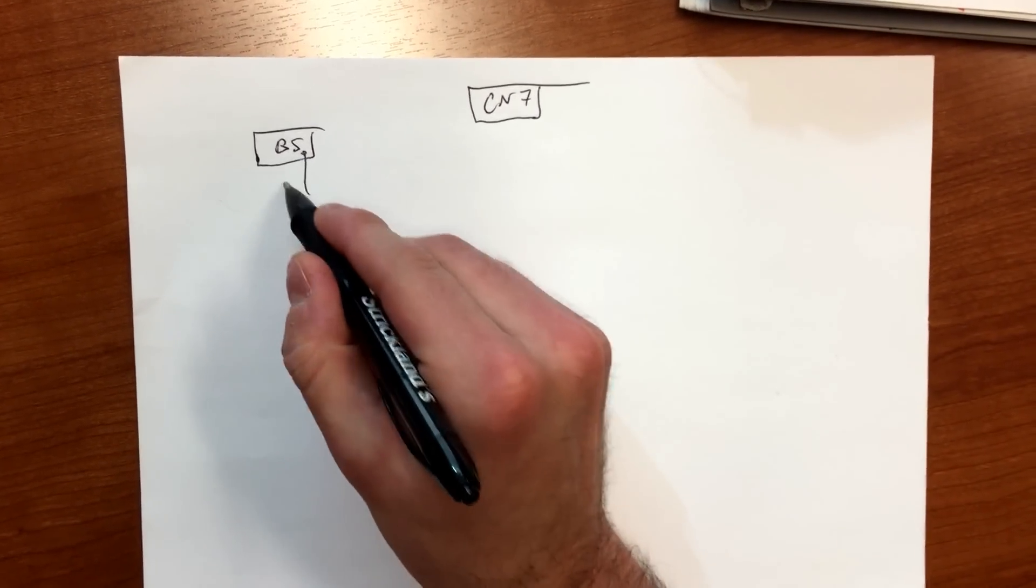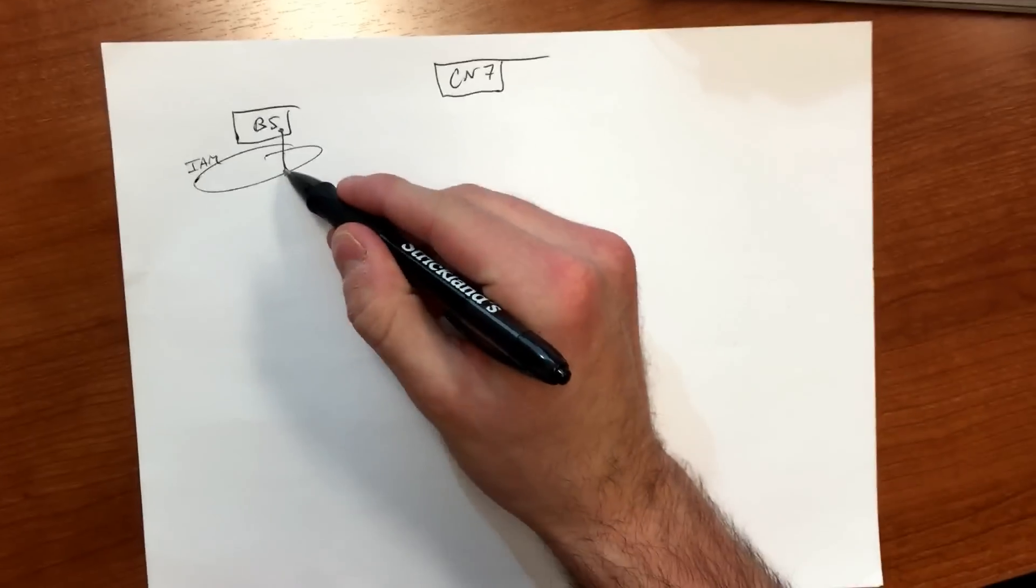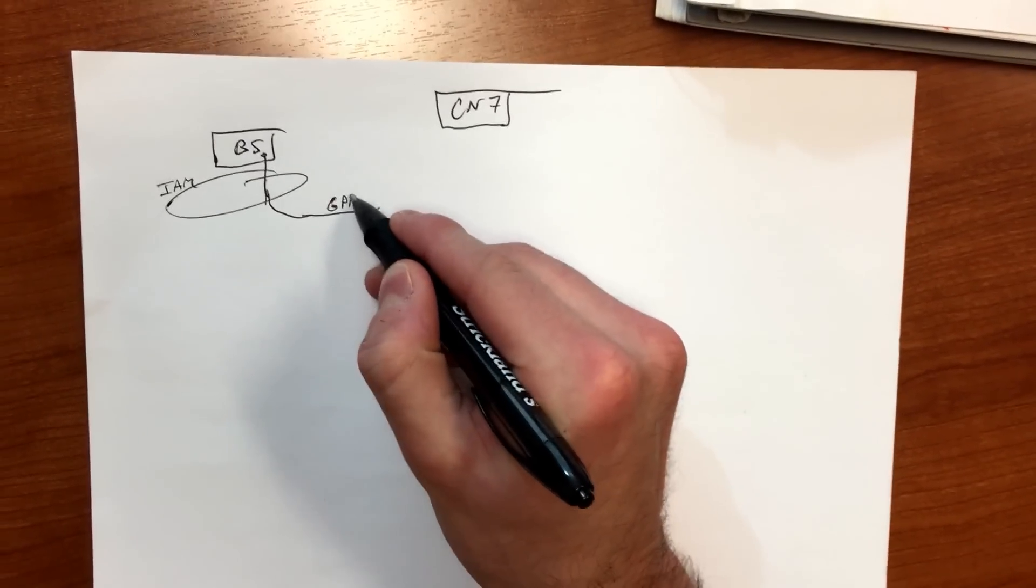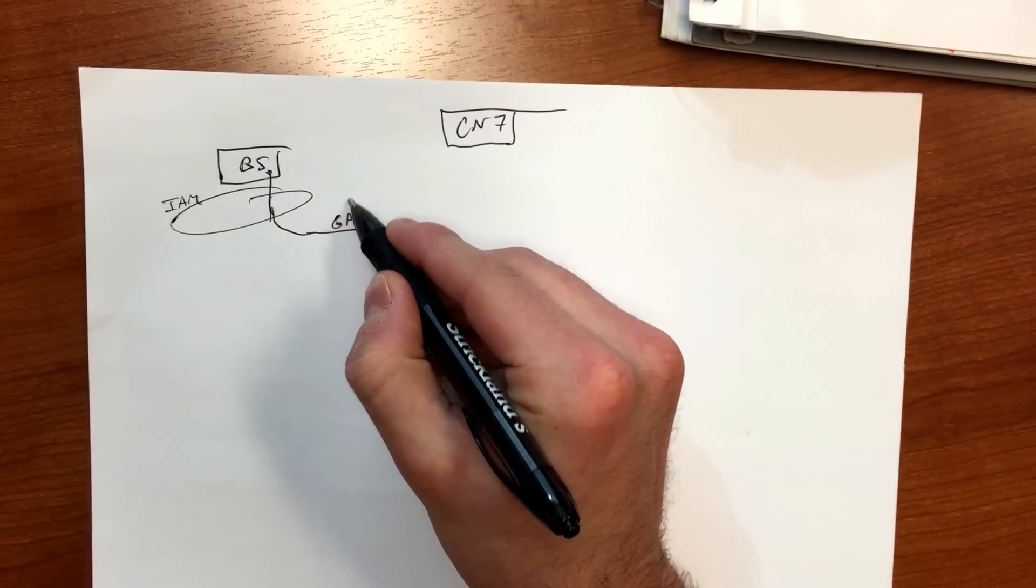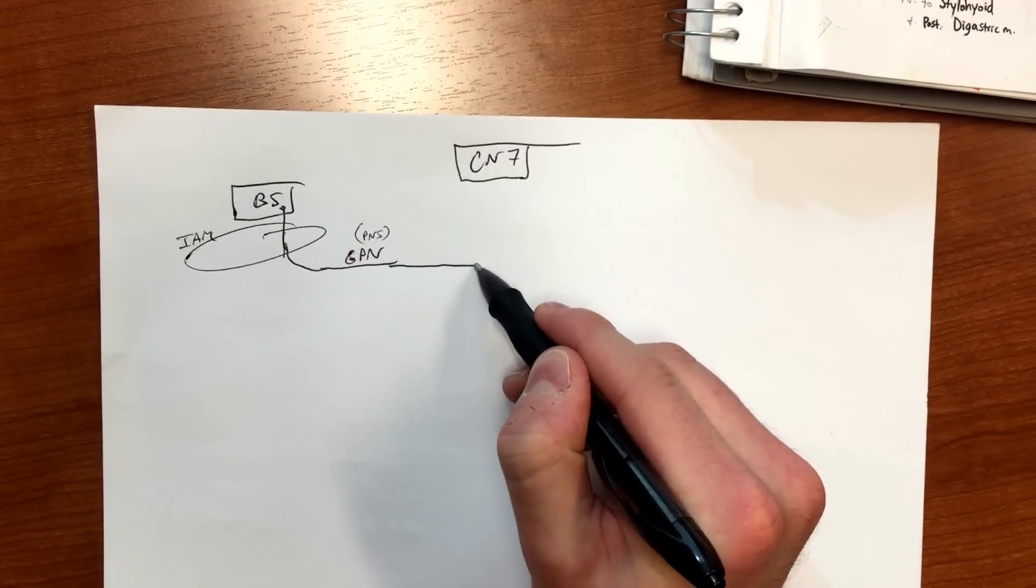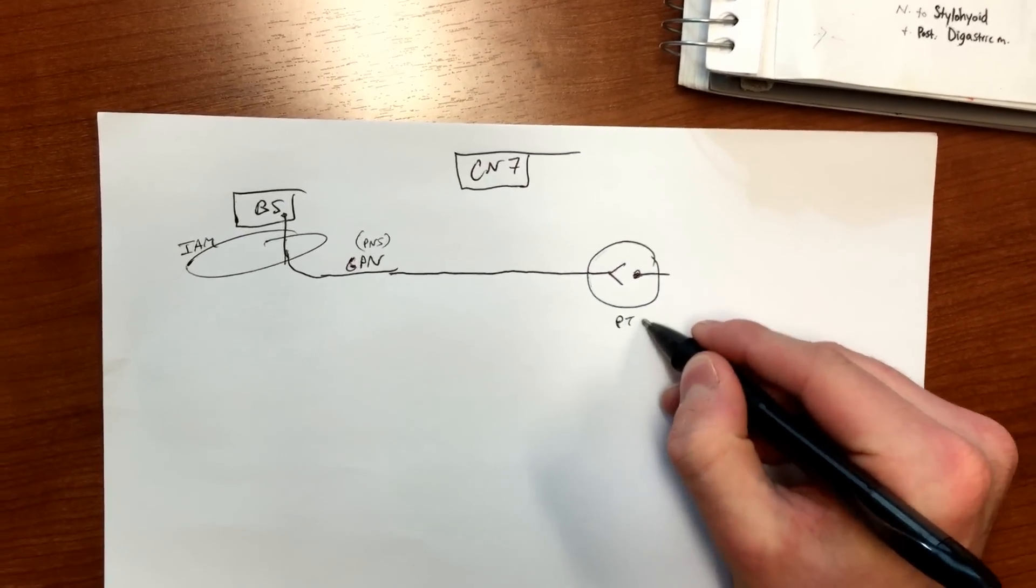Greater petrosal nerve, as soon as it comes out, is gonna hang over here. GPN, as we said, is a parasympathetic from earlier, so you can tie that there. And like we said earlier, it's gonna go and synapse at the PT ganglia.